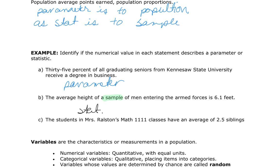Example C: the students in Mr. Rawlson's Math 1111 class have an average of 2.5 siblings. We are talking about all of his Math 1111 class and we know the average is 2.5 siblings. Because it seems like it's talking about all students in that class — they didn't say 'his third class of the day in winter quarter,' they said all the students in his classes have an average of 2.5 siblings — this is a parameter.